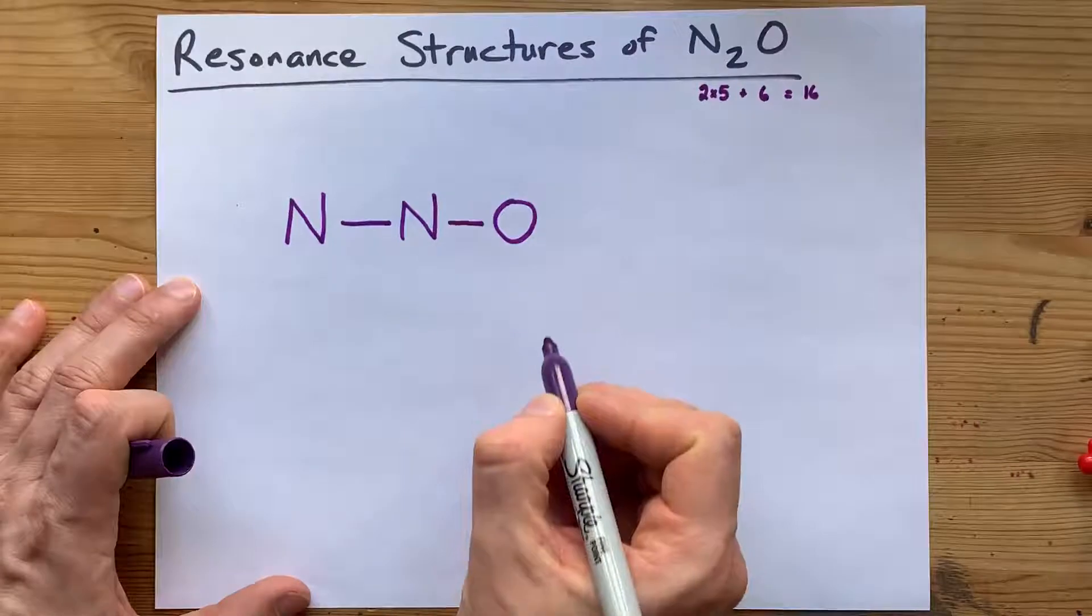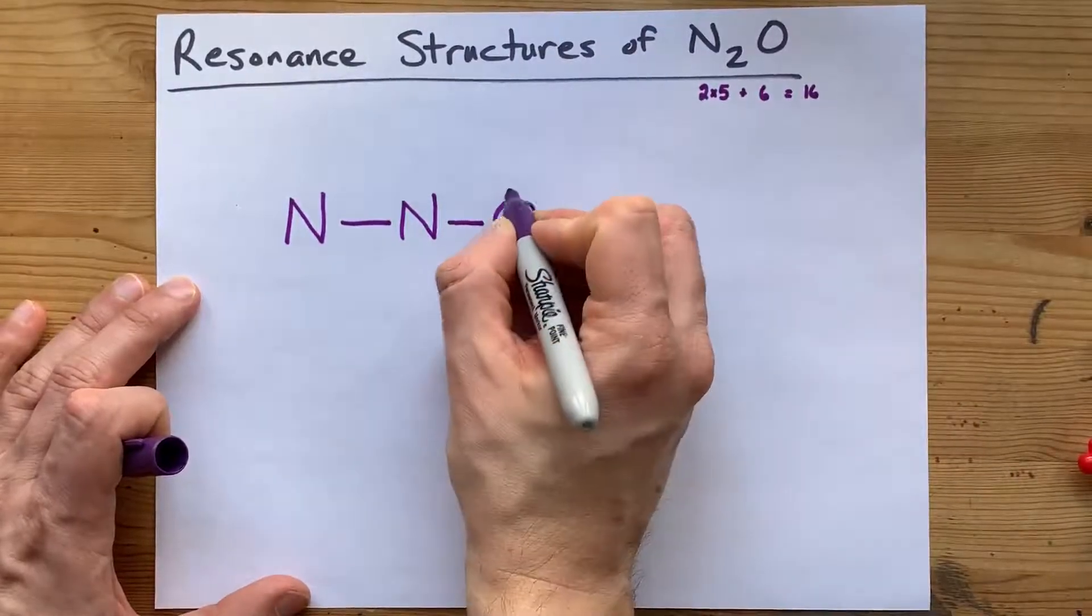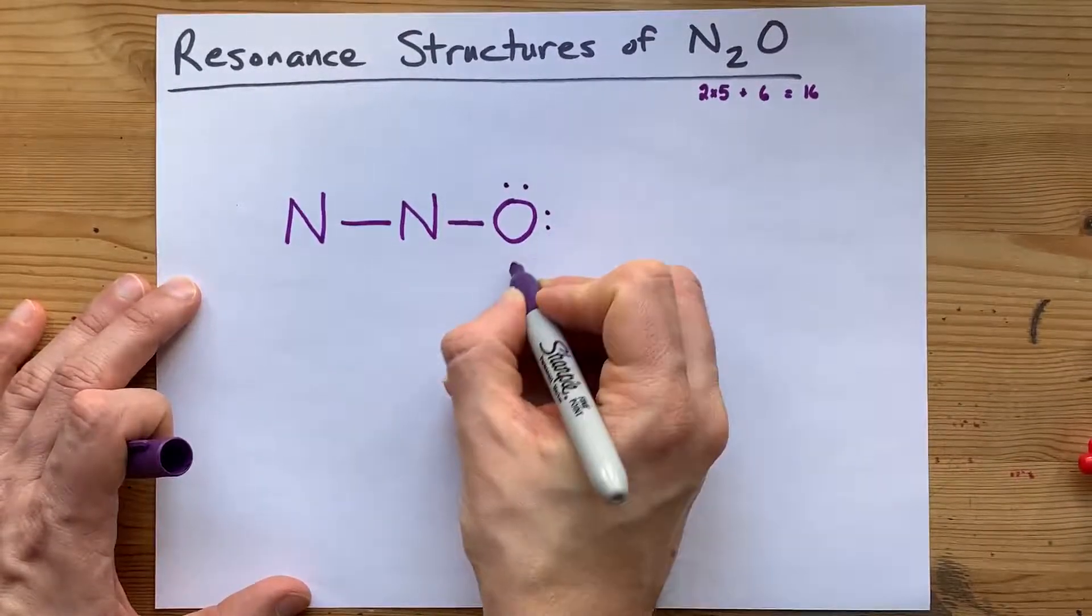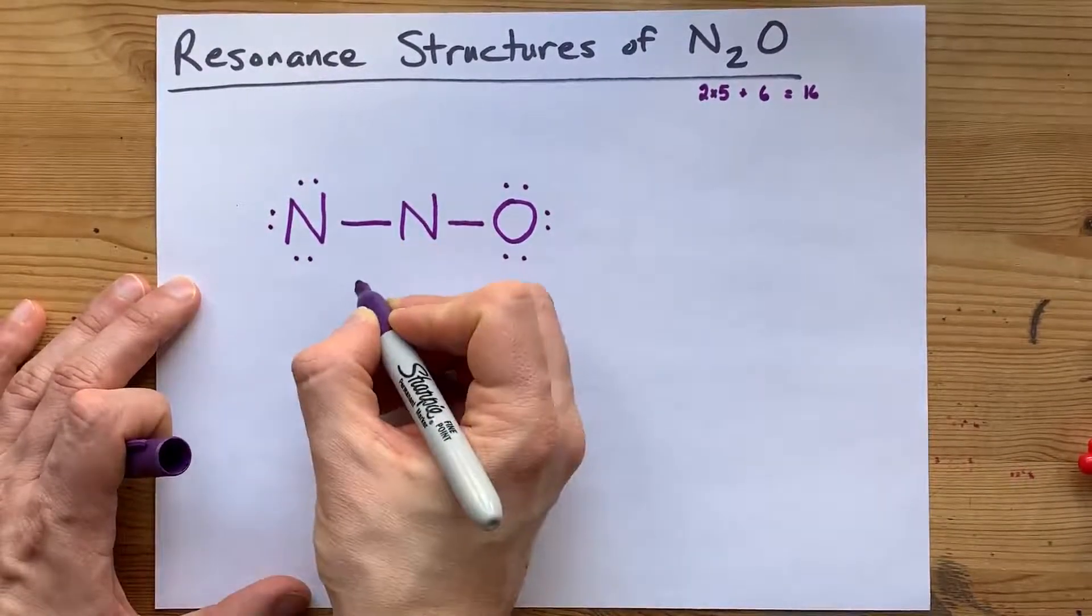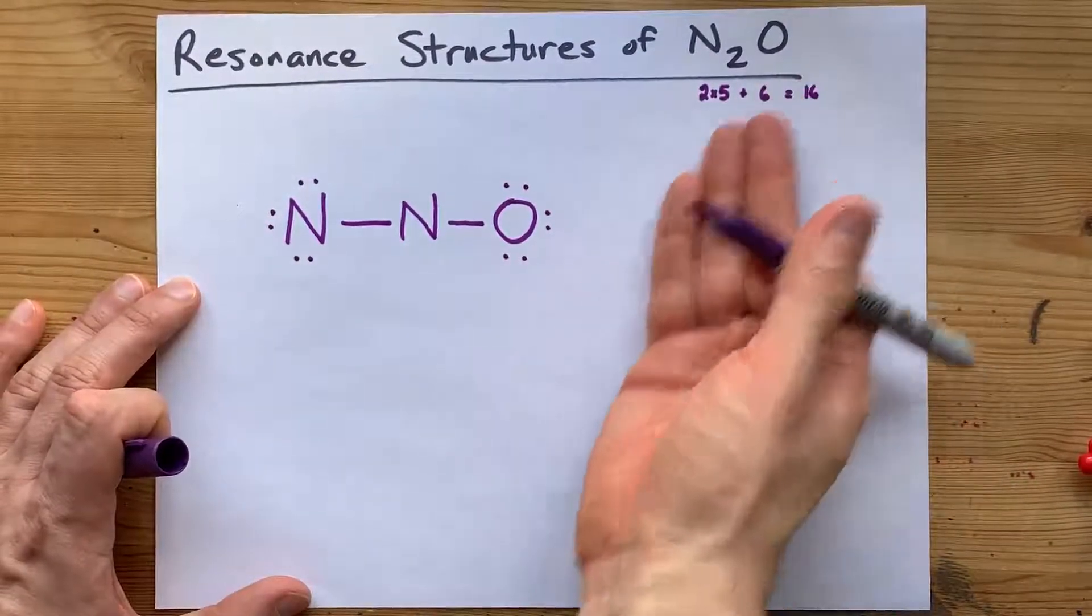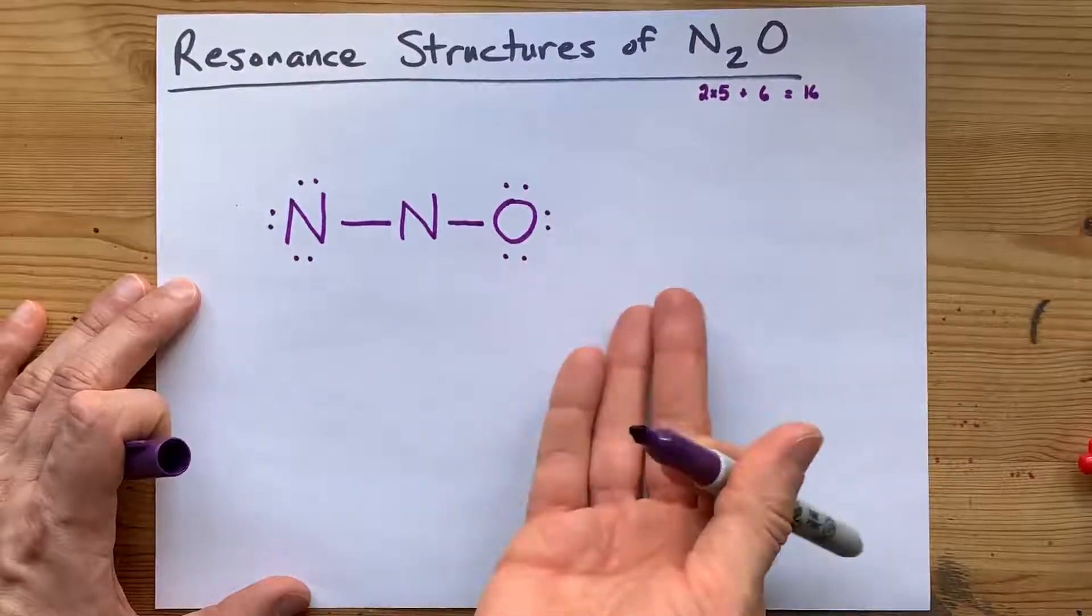So this was 2, 4 electrons, and I need 16. 5, 6, 7, 8, 9, 10, 11, 12, 13, 14, 15, 16. That's 16 electrons. That's all I'm allowed to use in the Lewis structure.